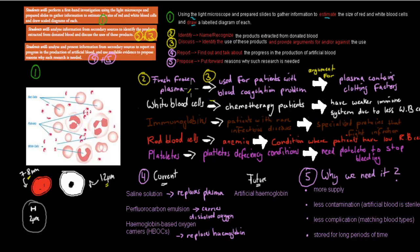One of the things extracted from donated blood is fresh frozen plasma, which has been used for patients with coagulation problems. The reason is that plasma contains clotting factors, so people with coagulation problems can clot their blood properly. White blood cells are used for chemotherapy patients because chemotherapy patients have a weaker immune system — they've lost white blood cells — so giving them more white blood cells helps ensure a properly working immune system.